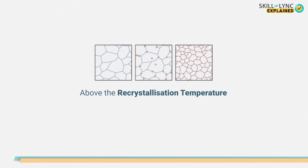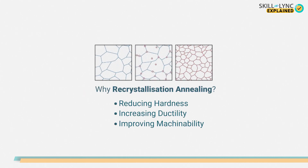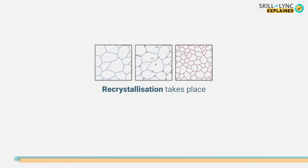In recrystallization annealing, the material is held at a temperature higher than the recrystallization temperature and then cooled down. This process is done for reducing the hardness and increasing the ductility of cold worked steel, so that it can be sent for further machining processes. Recrystallization occurs, which results in distorted cold worked grains being replaced by free grains of cold worked steel.